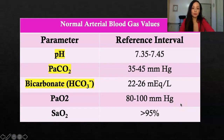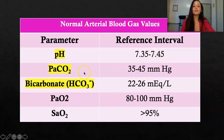Before we practice, you need to know the normal parameters for arterial blood gases. Normal pH is 7.35 to 7.45. The PaCO2 normal range is 35 to 45. Bicarb is 22 to 26 milliequivalents per liter.